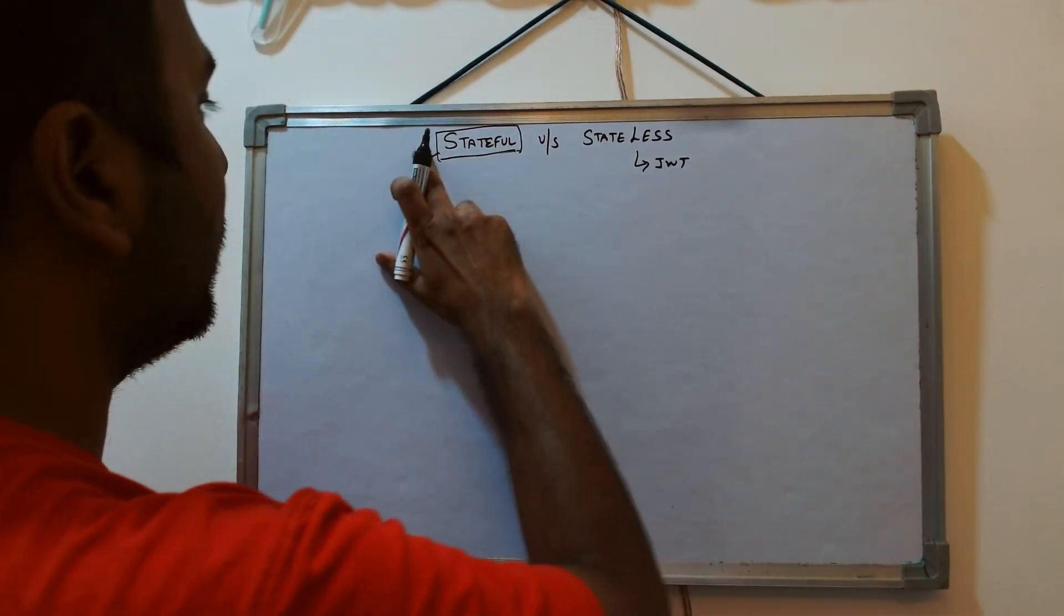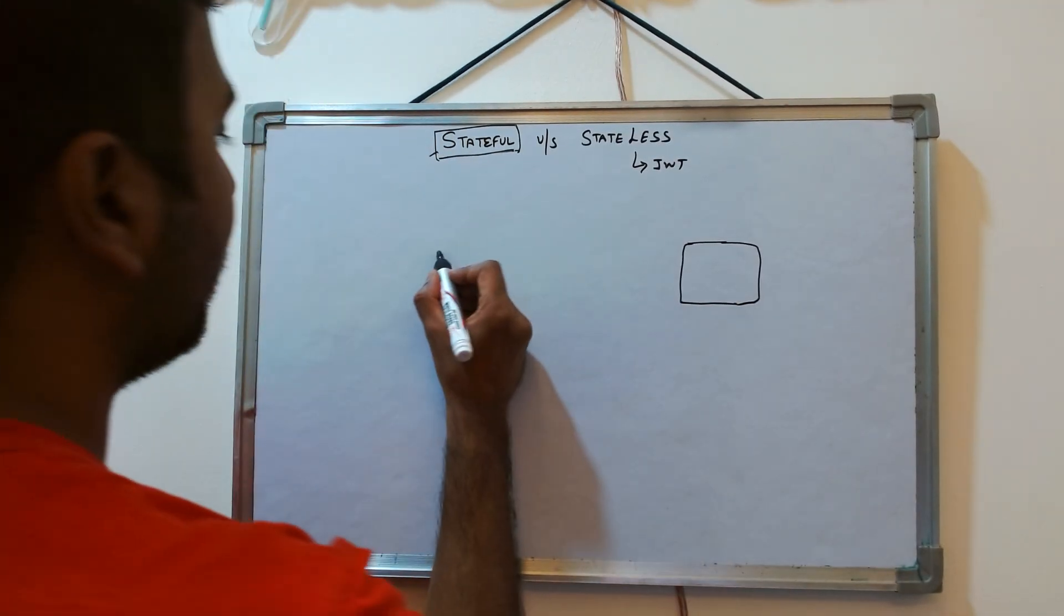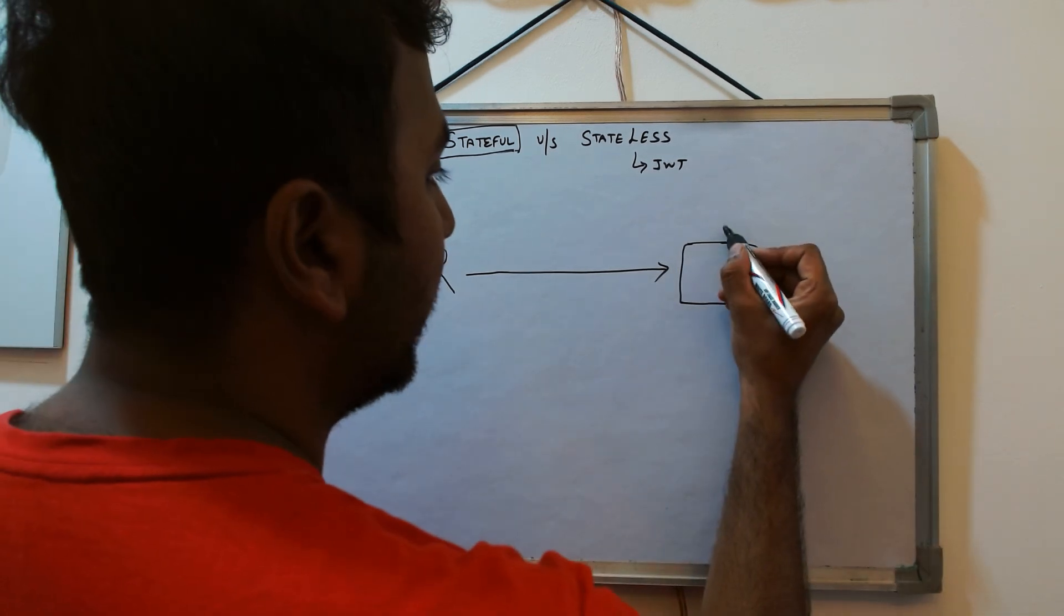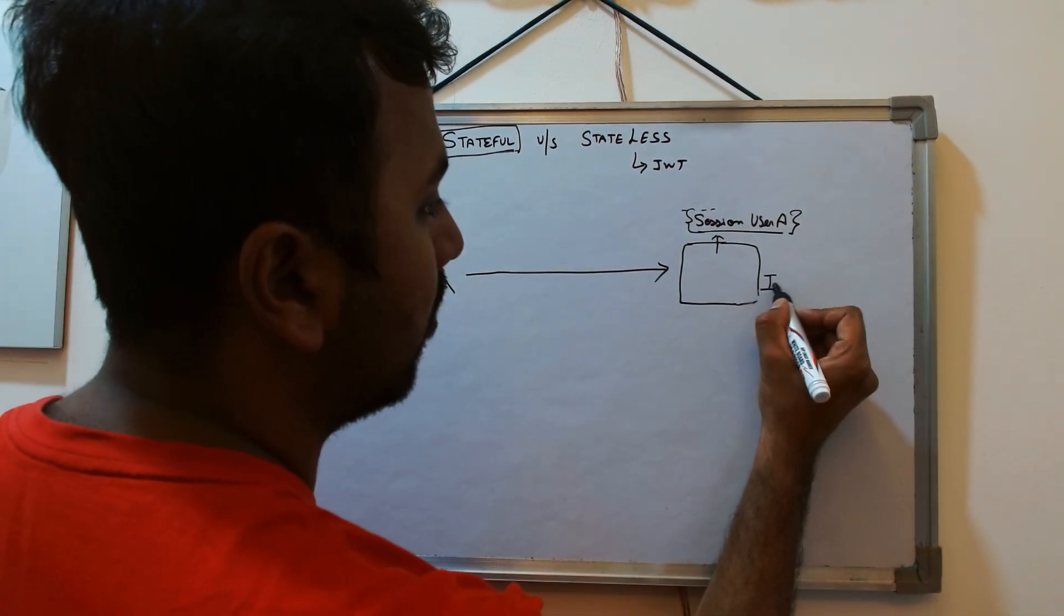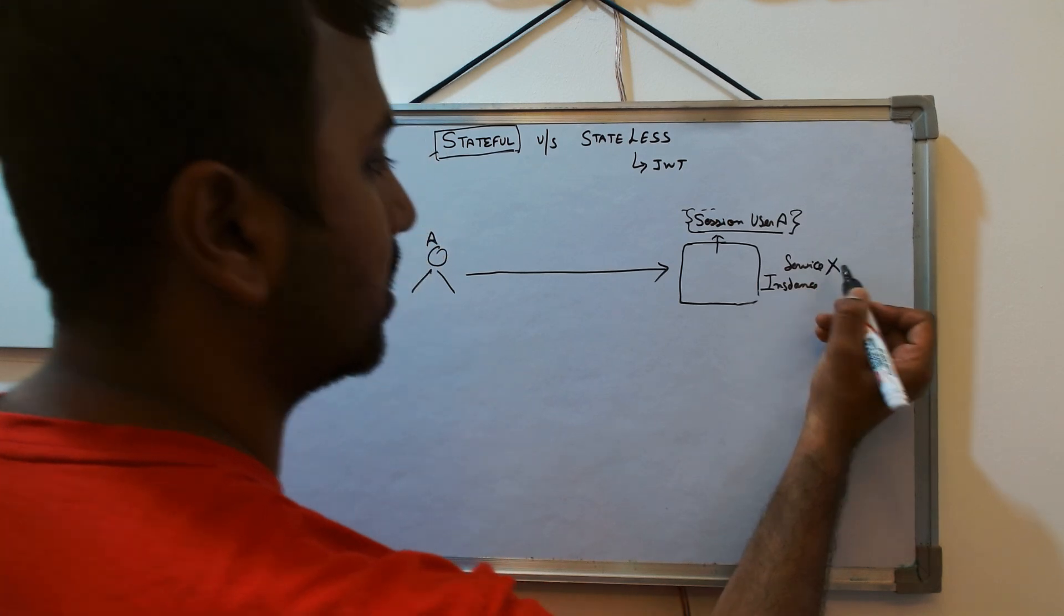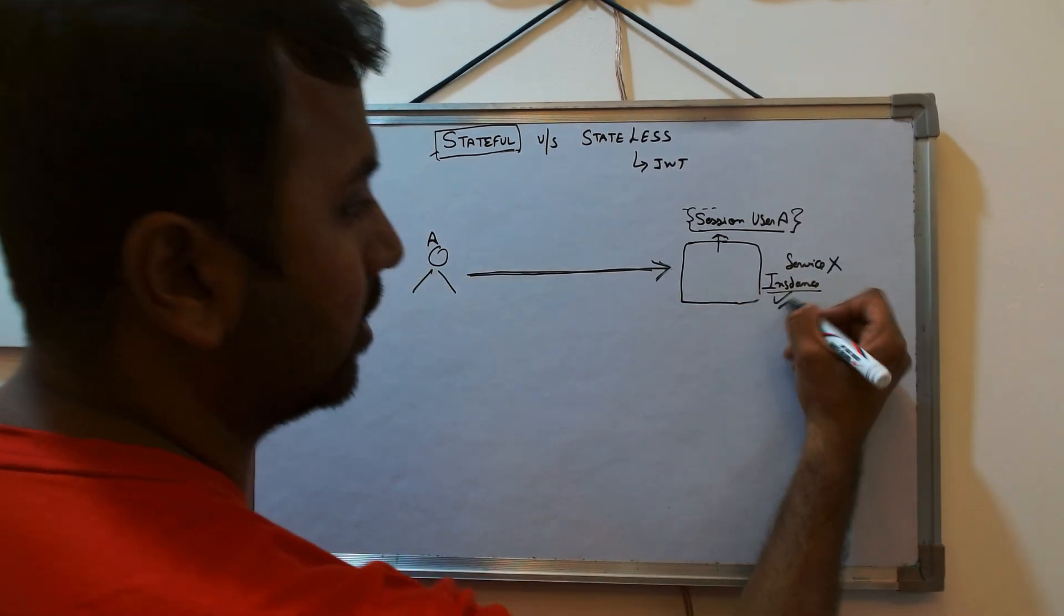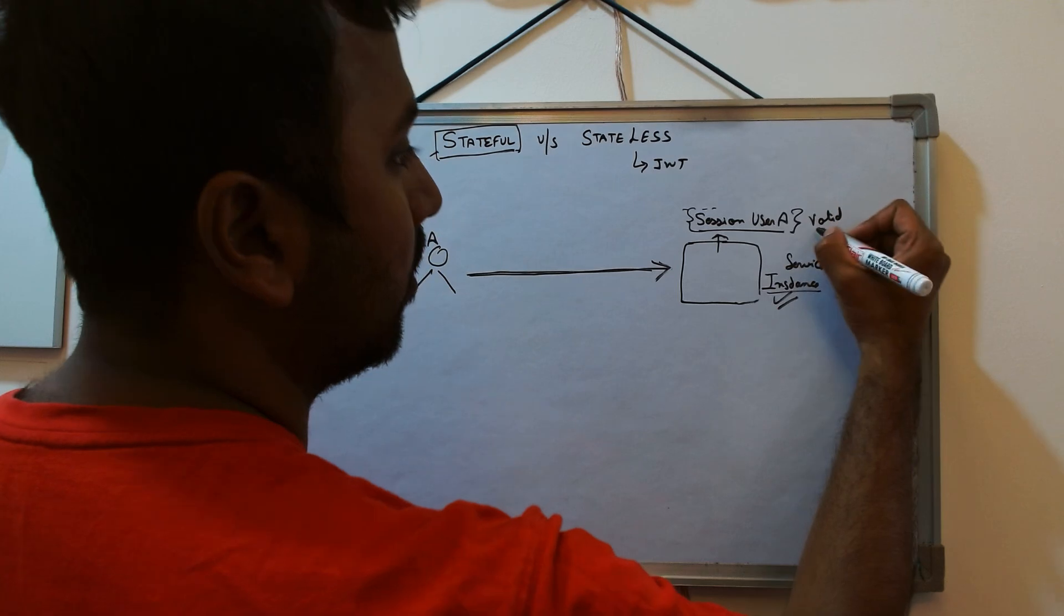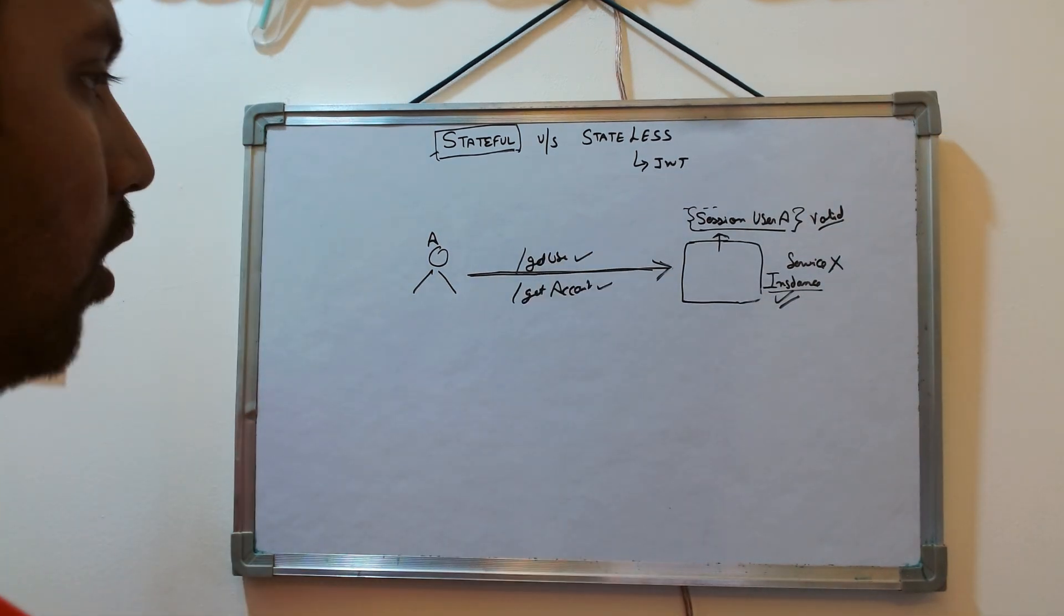So now we know the use cases, so let's take an example of session. What generally happens is earlier whenever a client makes a request, first it has to do a session, it has to log in. So internally it creates a session of user A. This is let's say one particular instance of service X. Now what happens is any subsequent request comes in from user A, this instance knows that this user A session is valid. Let it process it where any follow-up request, let's say get user detail. But now the problem comes here is...